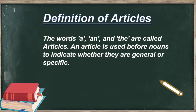What are articles? What is the definition of articles? In layman's language, we know that articles are simply of three types: a, an, and the. But here, we will study the definition of articles. That is, the words a, an, and the are called articles. An article is used before a noun to indicate whether they are general or specific.